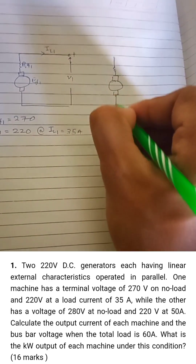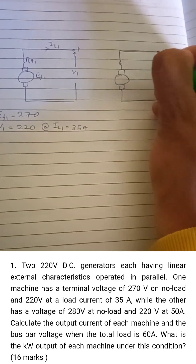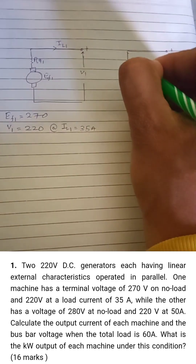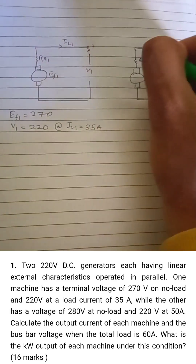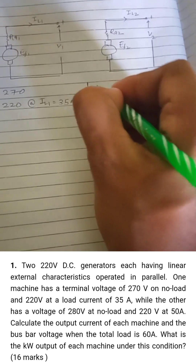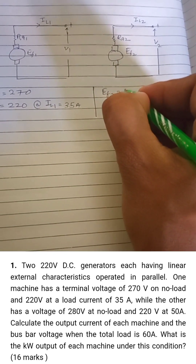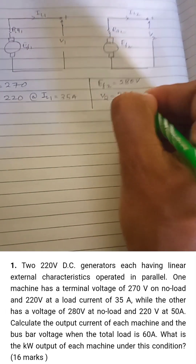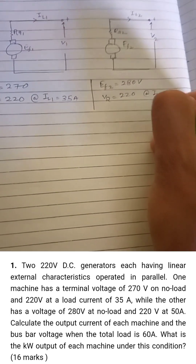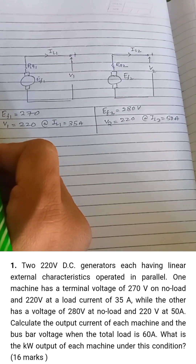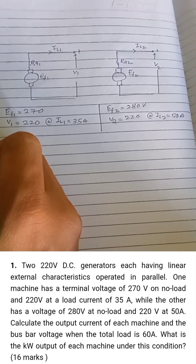The second generator is drawn similarly, with terminal voltage v2, internal generated voltage ef2, armature resistance ra2, and load current il2. For generator 2, the no-load voltage is given as 280 V, terminal voltage as 224 V, and il2 = 50 A.